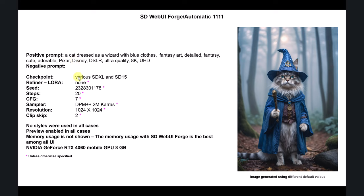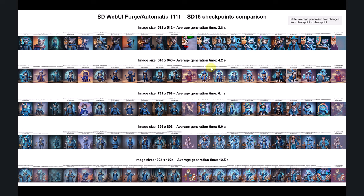No negative prompt. I'm using many checkpoints — both XL and 1.5. SD 1.5 is still not dead. I was quite surprised because I started doing everything with XL, but when I went back to 1.5 for some reasons, it works very well. For generating images, these are the default values unless otherwise specified.